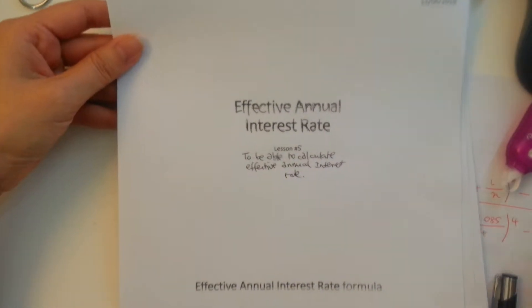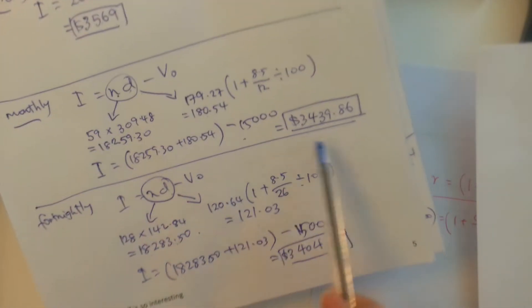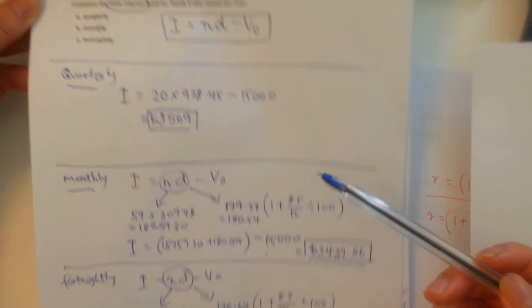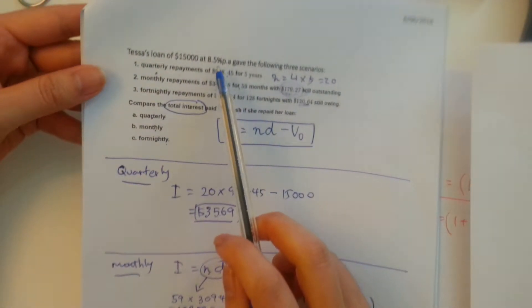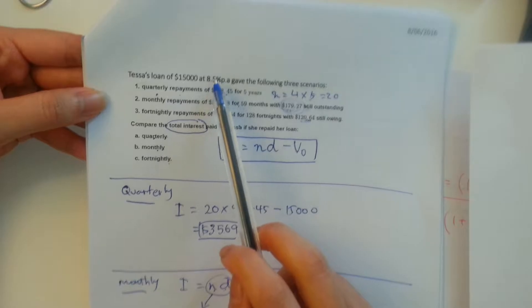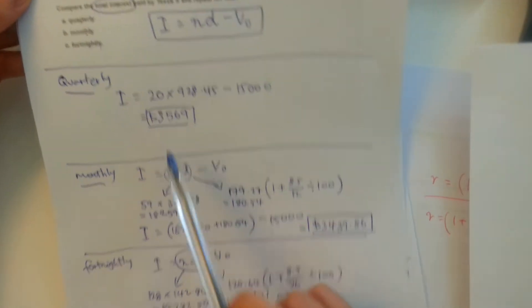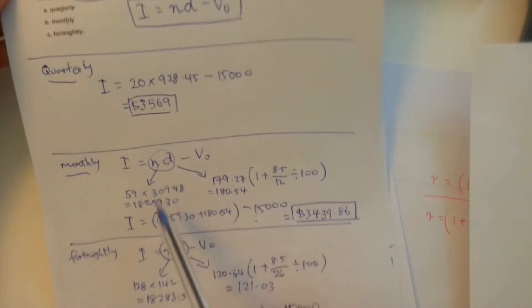So this leads us to today's lesson on effective annual interest rate, because when you change your frequency of payment, the interest changes and effectively the amount of interest as a percentage that you're paying per annum is going to be different. It varies. It's not going to be the 8.5% that was stated. You'd find that when you calculate it for the three, they're actually going to be slightly different.